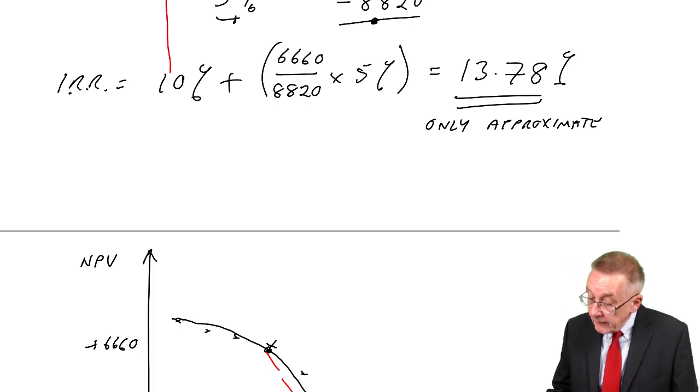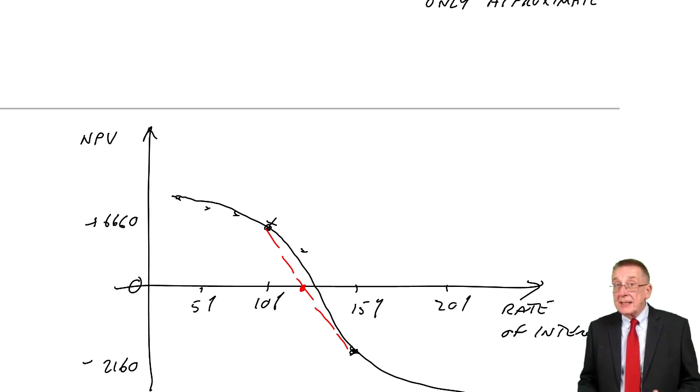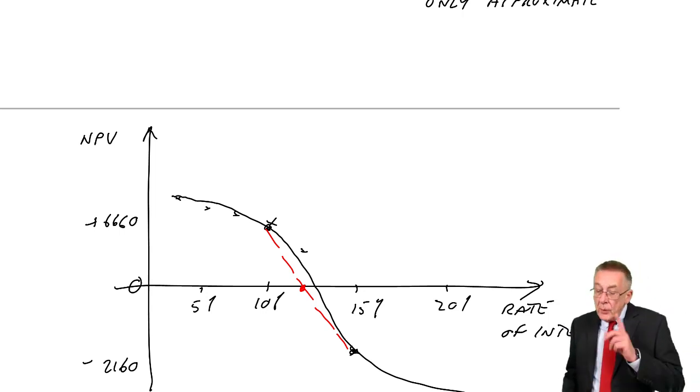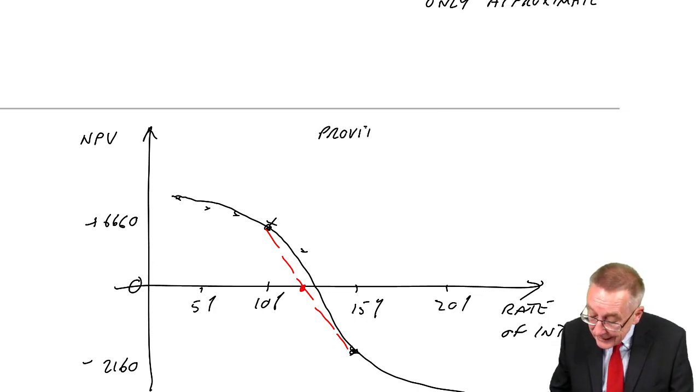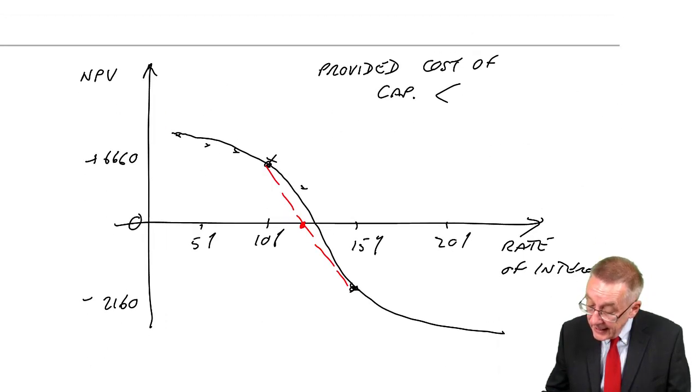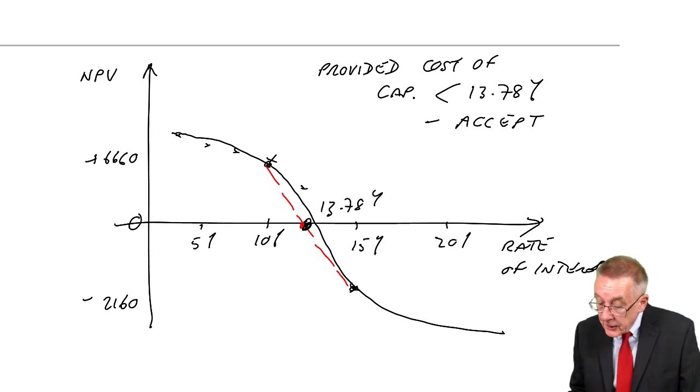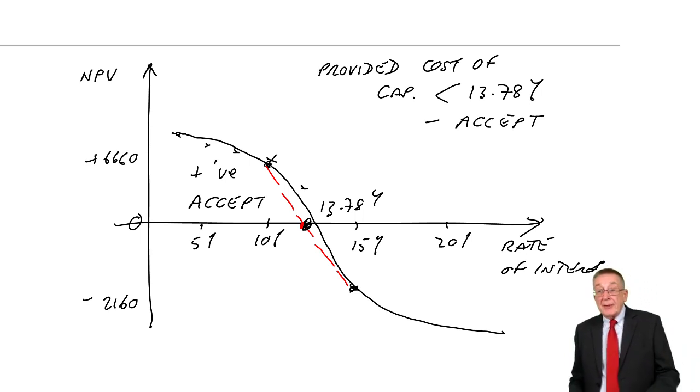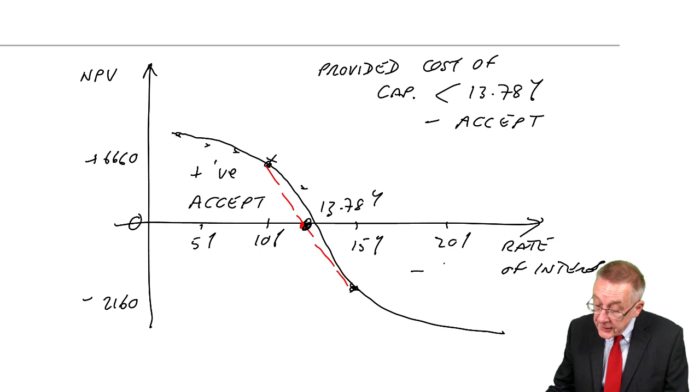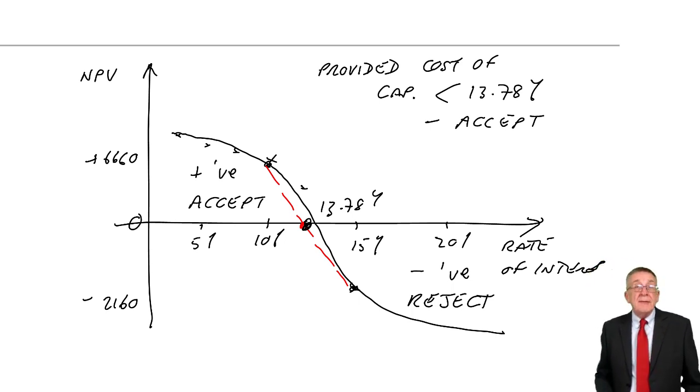And what's the relevance of that? Well, remember for our question, we think the cost of money is 10%, but we might be wrong. We now know that provided the cost of capital is less than 13.78%, then we're correct to accept. Look at the graph. The IRR is 13.78. So for any lower rate, the NPV is positive, and we should accept. However, if there was any chance of the cost of capital being more than 13.78%, then it's negative, and we would reject.